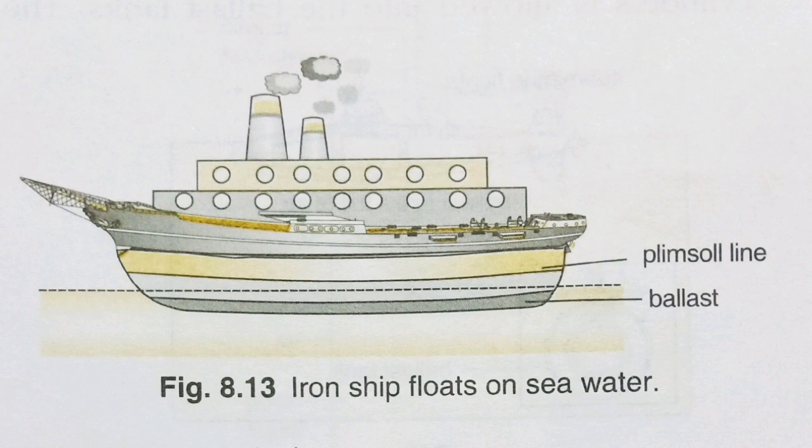First: the flotation of iron ships. An iron nail sinks in water while a ship made of iron does not sink but keeps on floating. Since the density of iron is greater than the density of water, the weight of the nail is greater than the weight of water displaced, so it sinks. An iron ship does not sink because a ship is hollow inside, which reduces the average density of the ship to less than that of water, so it floats.